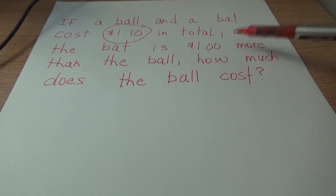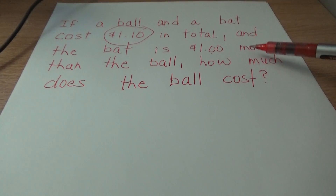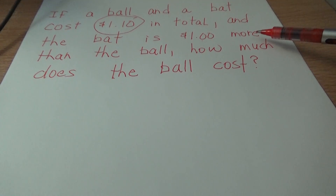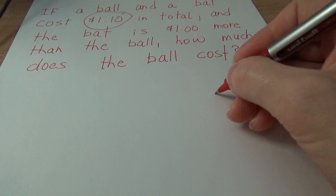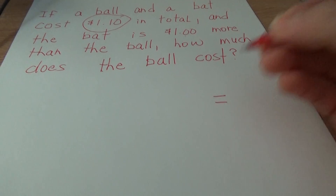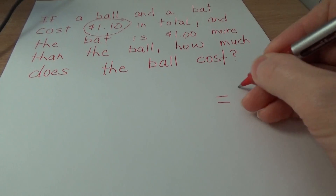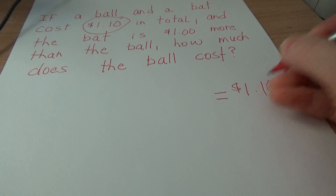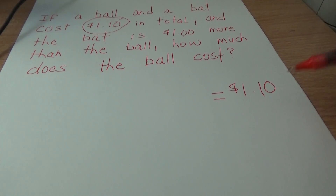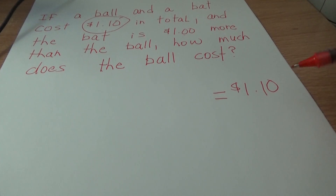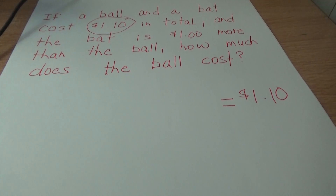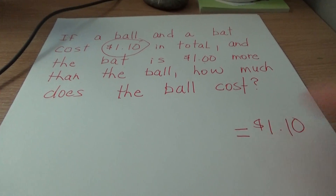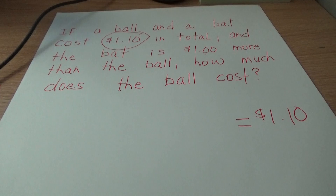So we have to figure out how much the ball costs. Now, we know the bat is a dollar plus some change — that's what 'a dollar more' means. How much change? All we know is that the two things have to equal a dollar ten. Now, some people still insist the ball is ten cents.